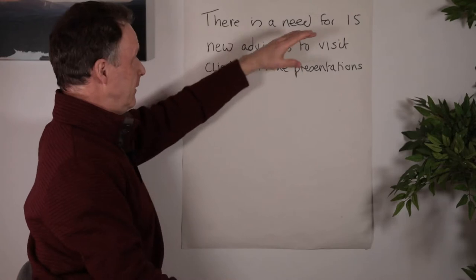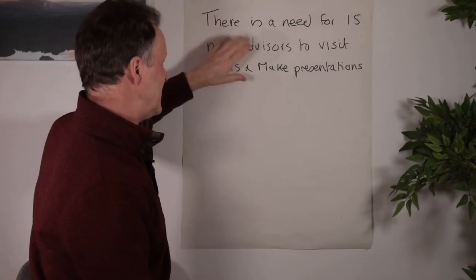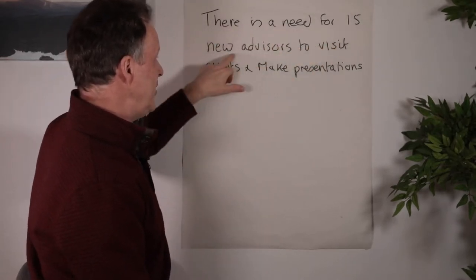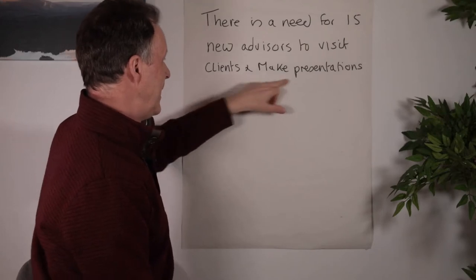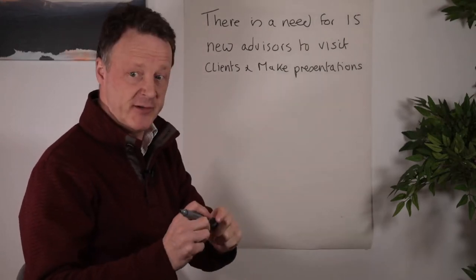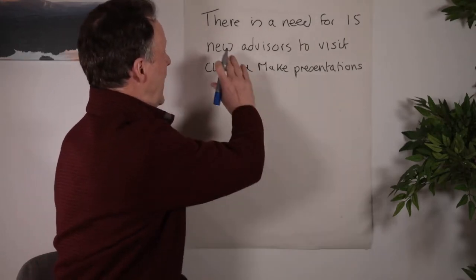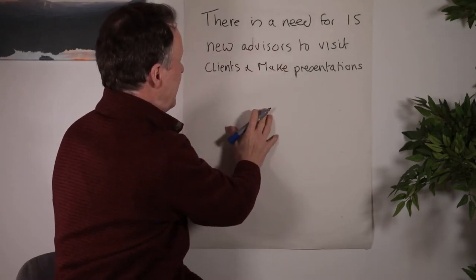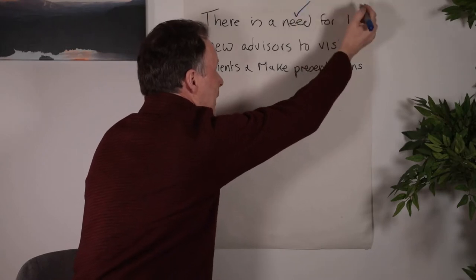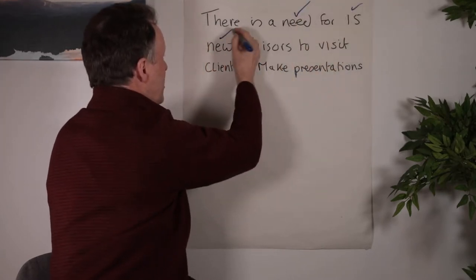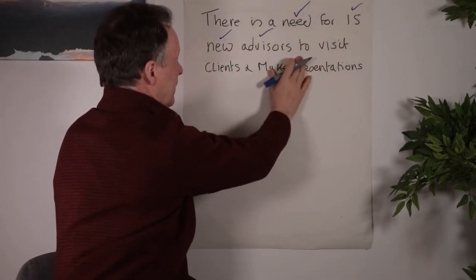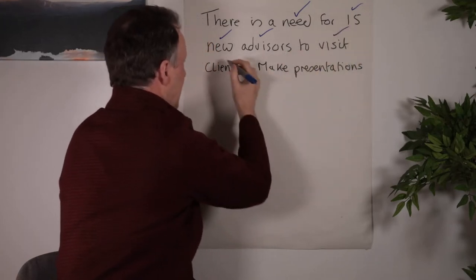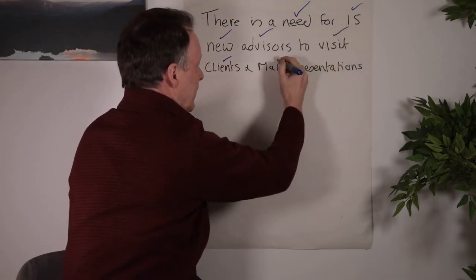So here we have some knowledge, well, information actually, at this point. There is a need for 15 new advisors to visit clients and make presentations. Now, first of all is the deep filter. So I'm going to miss out all that what I call the glue words. And the key information there is probably need, 15 new advisors, don't need to visit clients, I don't need and, and make presentations.